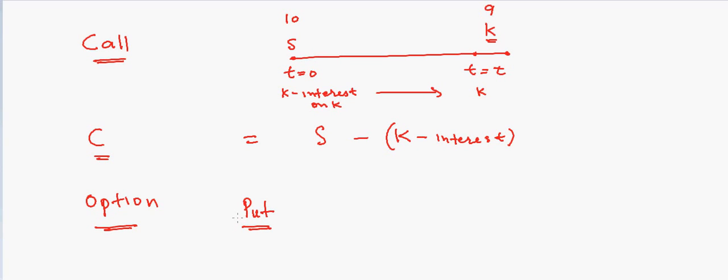So we have an inbuilt put in the call, so we have to also remove the put value from the call. So if we sell the put and we put P_P here, then we'll have a better form of call-put parity.